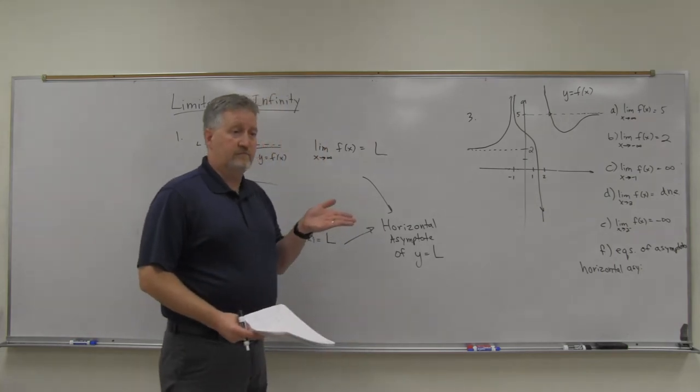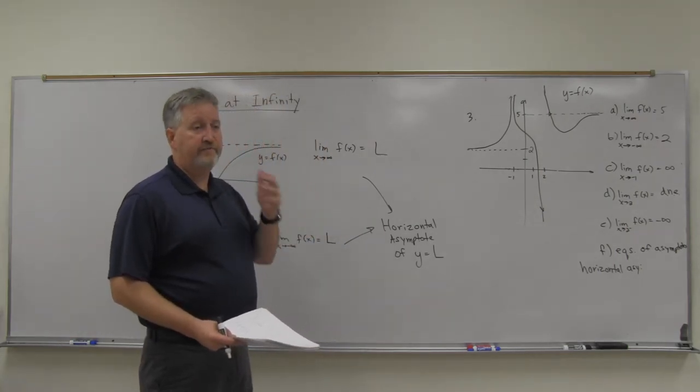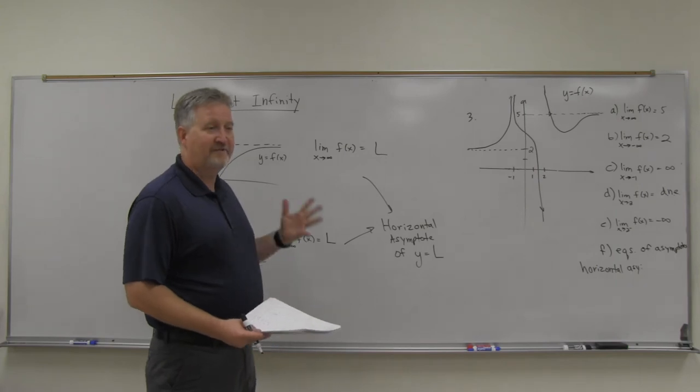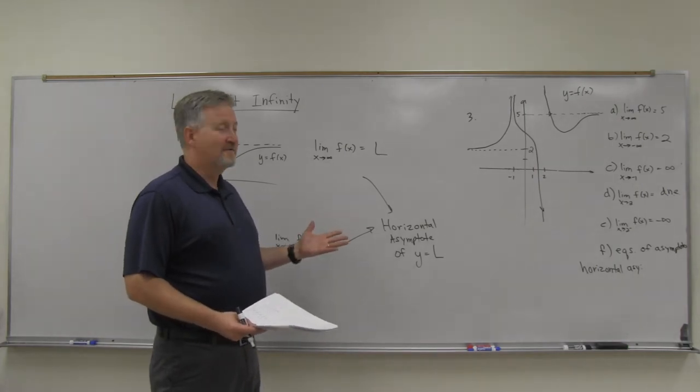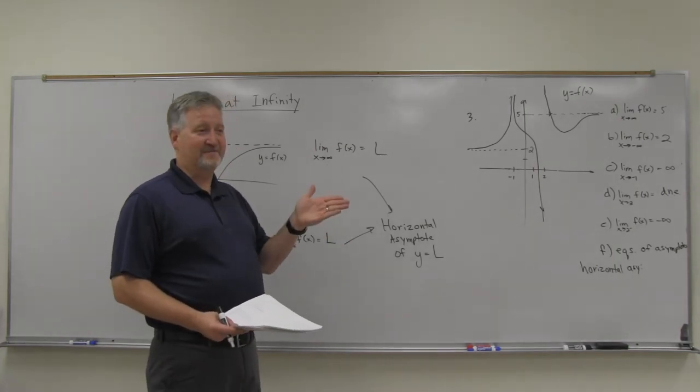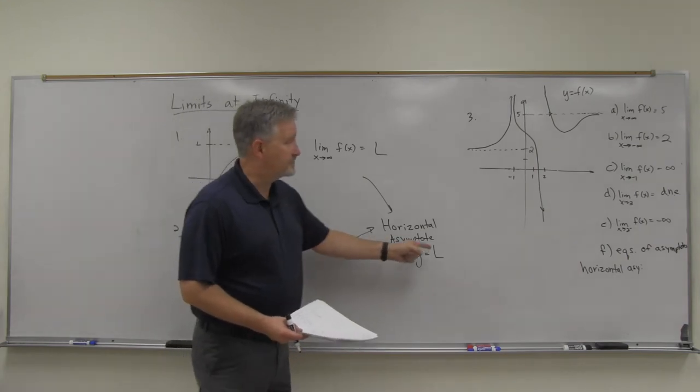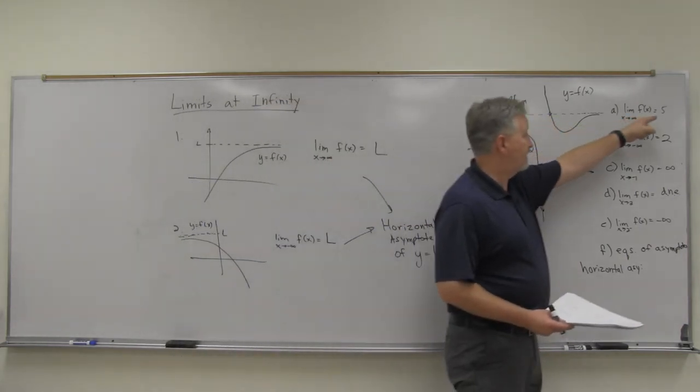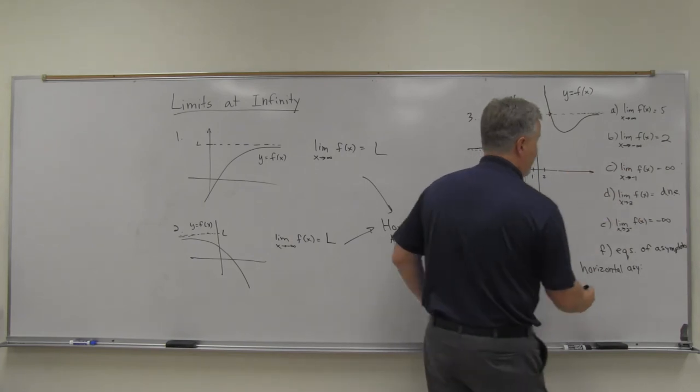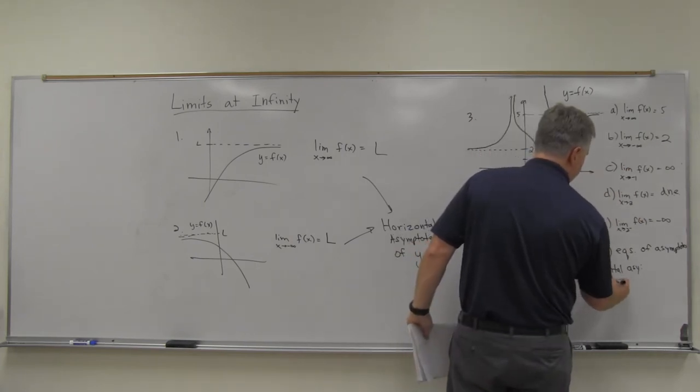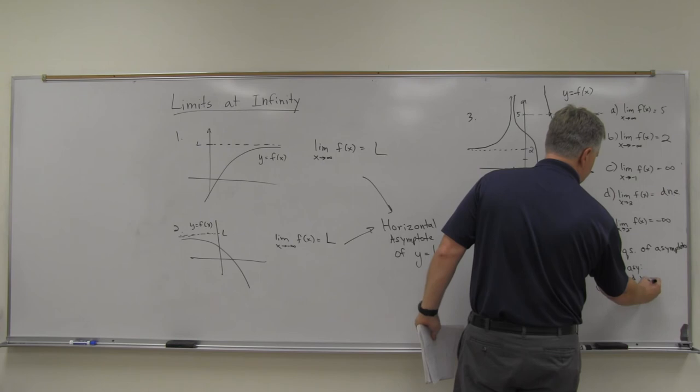A lot of times functions just have one, but I made this function up, so I can do whatever I wanted. So I've got two horizontal asymptotes, don't I? And it's y equals l, so I've got y equals this l and y equals that l. So it'd be y equals five and y equals two. With me there?